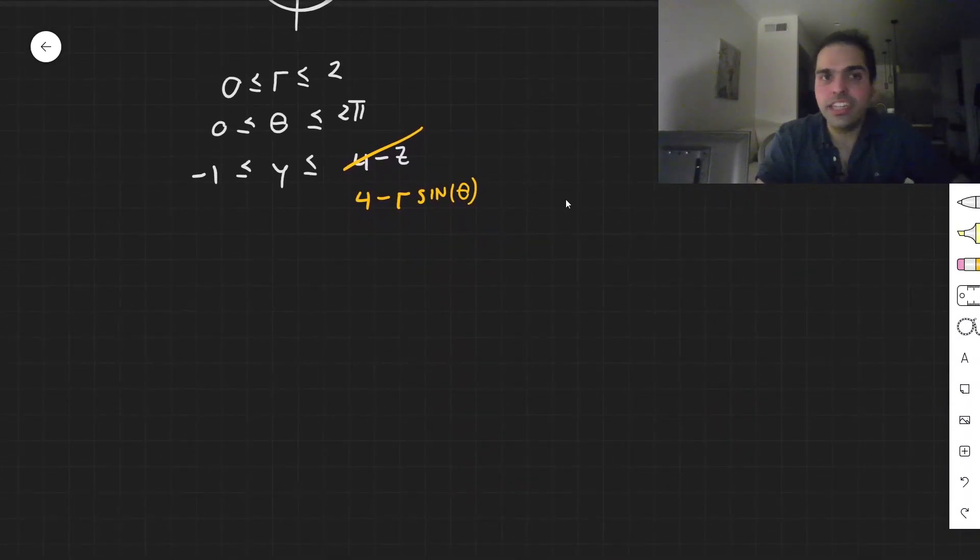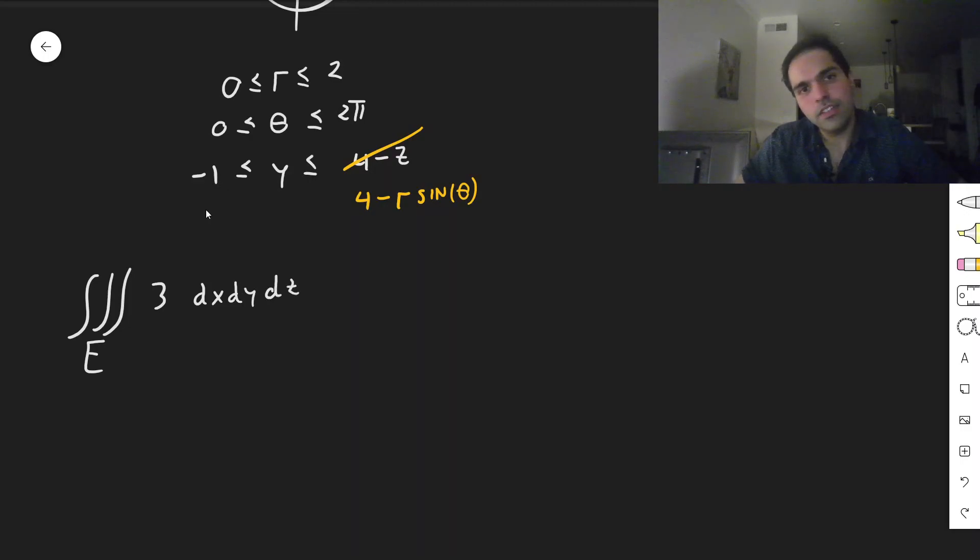And now we are ready to integrate. We have all the info that we need. So we need to calculate the triple integral of 3, dx, dy, dz. Well, first we did y. So y between minus 1 and 4 minus r sine of theta. And again, the function is 3, dy. And then r is between 0 and 2. And finally, theta is between 0 and 2 pi. So dr and d theta. And as is usual in polar coordinates, don't forget about r. Because a pirate says, r dy dr d theta.